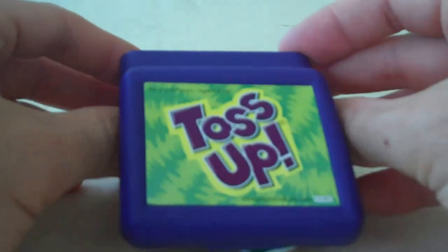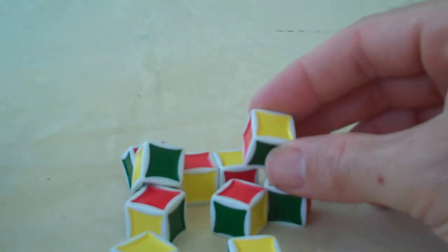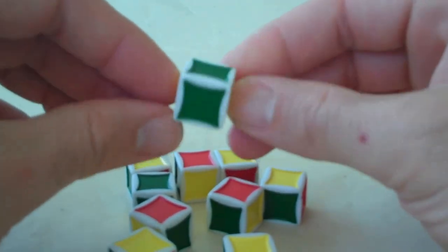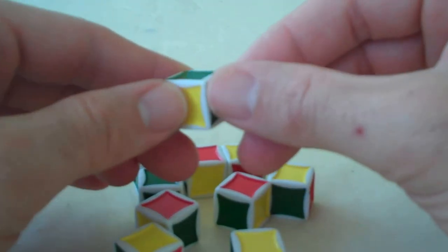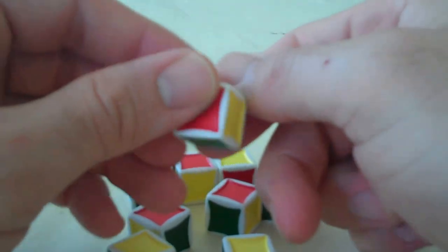The game comes with ten dice, each die having six sides. The sides are three greens, two yellows, and one red.